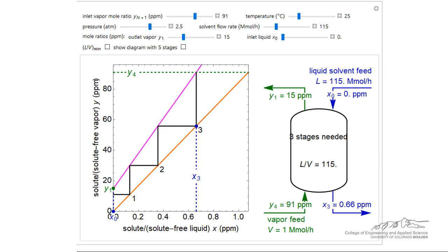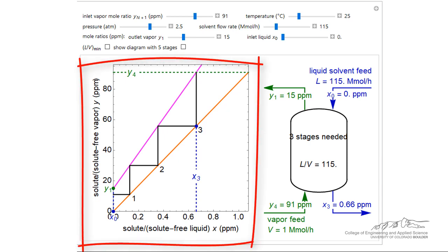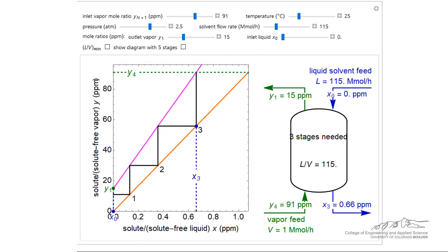The outlet concentration of the liquid phase can be obtained by a simple component mass balance on the entire column. The graph on the left plots the concentration of the solute in the gas phase versus the concentration of solute in the liquid phase. Note that both the y and x axis are plotted on a solute free basis.